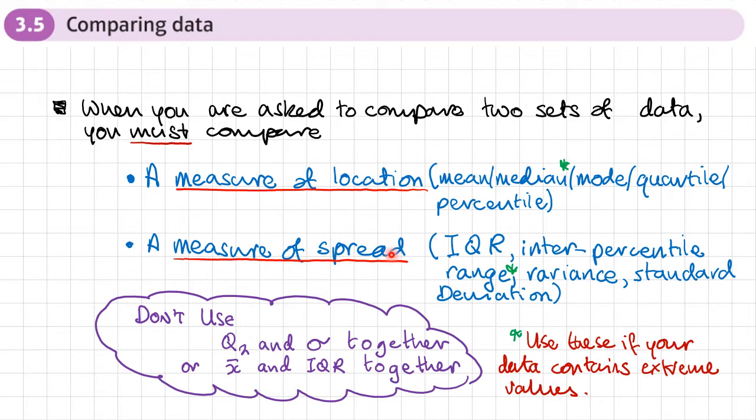For a measure of spread, you could use the interquartile range, interpercentile range, variance or standard deviation. Now, you shouldn't use these together. So the median and the standard deviation shouldn't be used together when you're making a comparison, or the mean and the interquartile range. They shouldn't be used together when making a comparison.